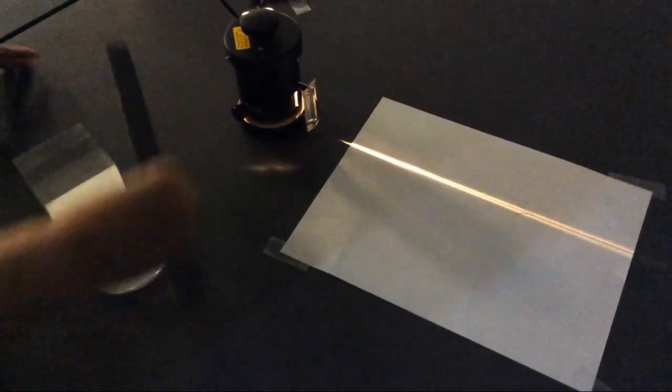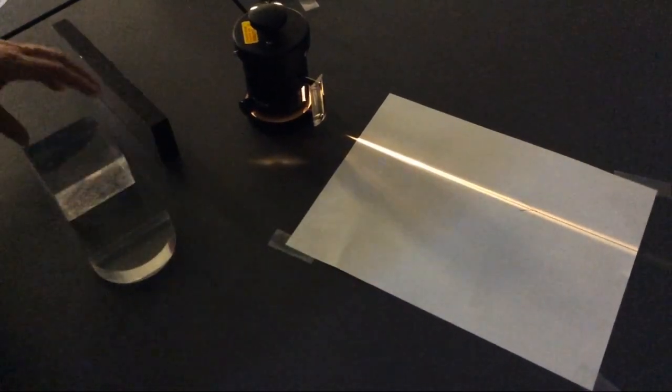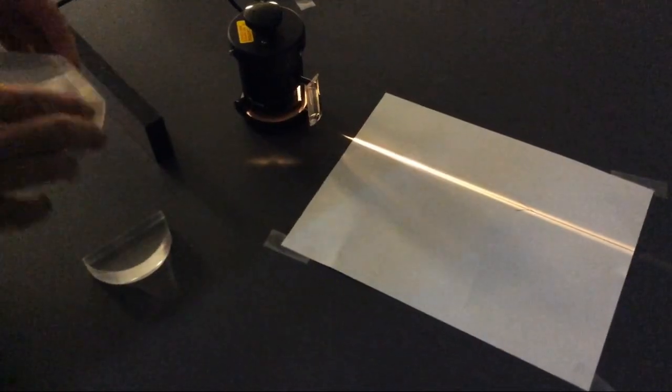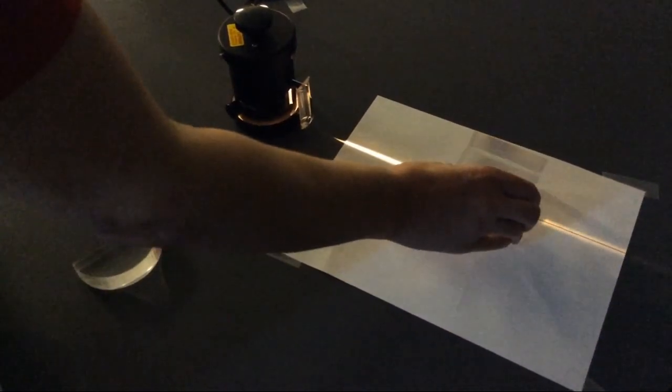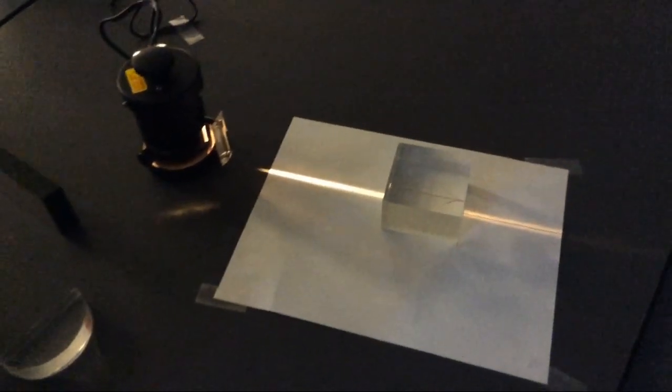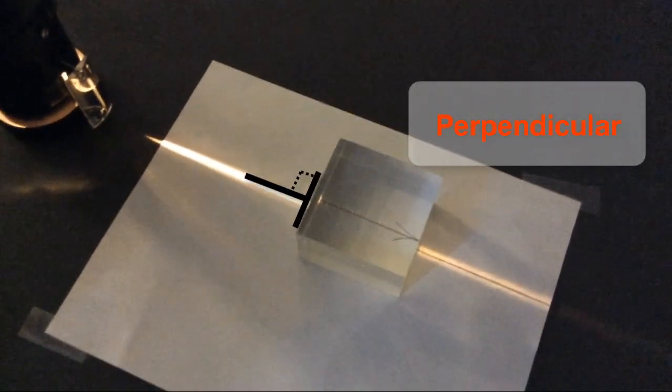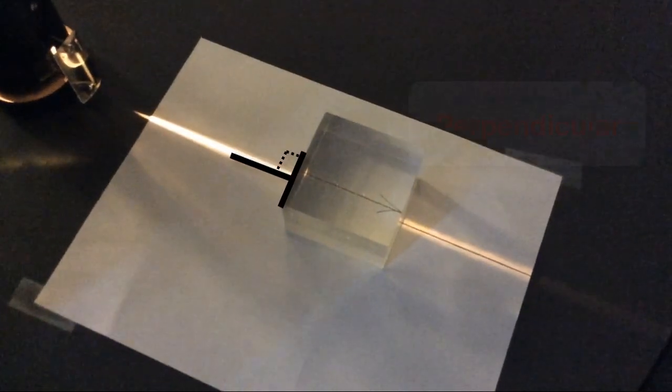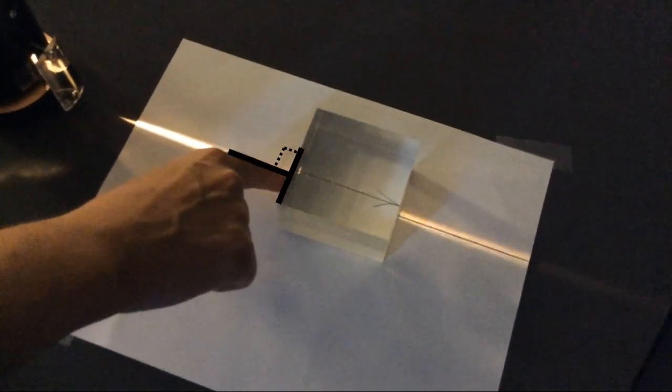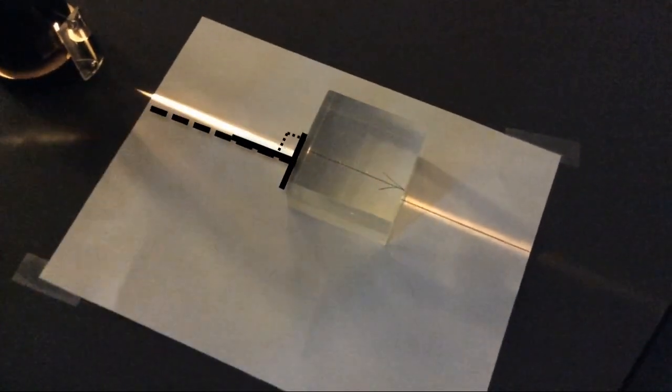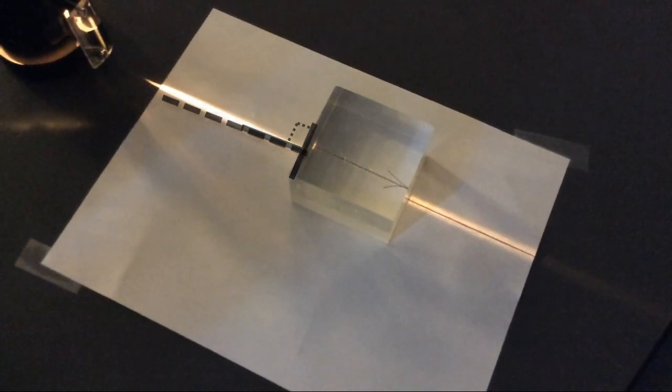But you might ask, what will happen if instead of the mirror, we have a glass slab that the light can go through? Right now, I place the glass slab in such a way that its surface is perpendicular to the light ray. In other words, the normal to the surface is exactly situated along the light ray.